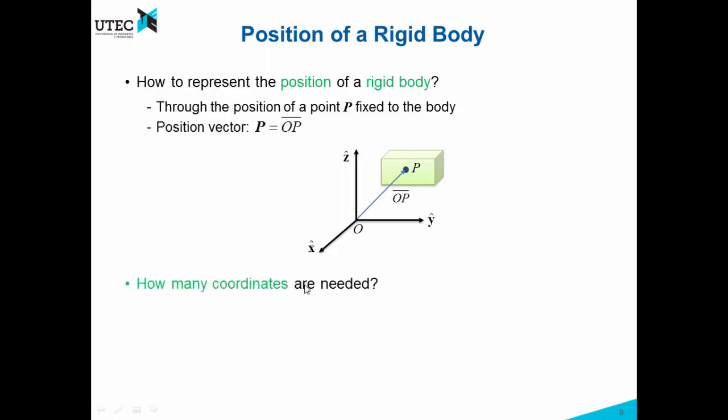How many coordinates are needed to represent the position? If we are in two dimensions, we need two coordinates, as we saw before, which are two degrees of freedom. If we are in 3D, we need three coordinates, because we have three degrees of freedom for the position in 3D.